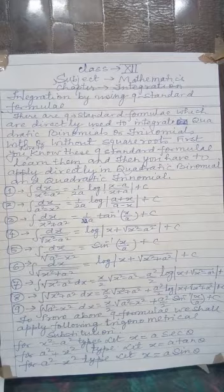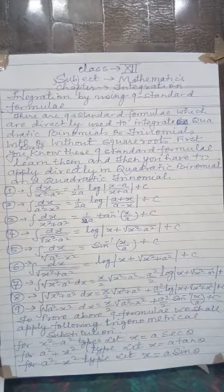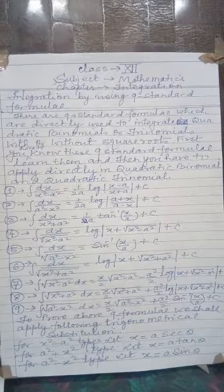For all expressions containing x square minus a square type, you can always let x equal to a sec theta. For x square plus a square type of expression, you will always take let x equal to a tan theta. And for a square minus x square type, you can take let x equal to a sine theta.